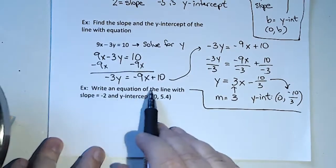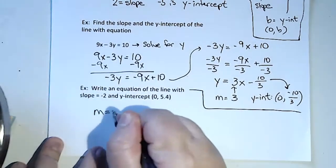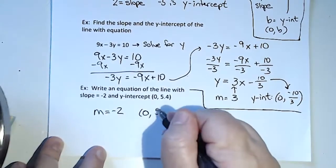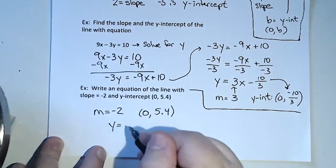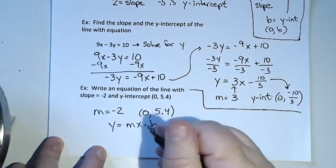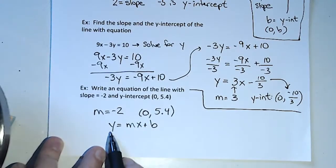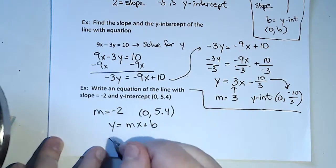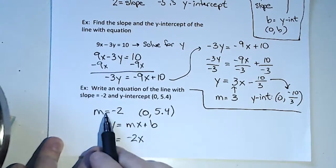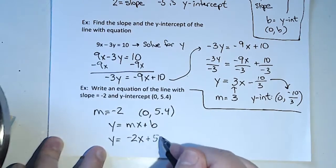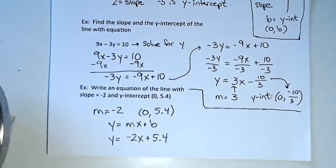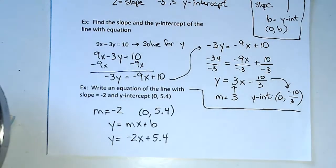Write an equation of the line with slope = -2 and y-intercept (0, 5.4). As long as I've got y = mx + b, my slope just gets plugged in right there. The slope is -2, that goes right in front of x. And whatever the y-coordinate of the y-intercept is goes in for b. So y = -2x + 5.4. We just finished the first page!